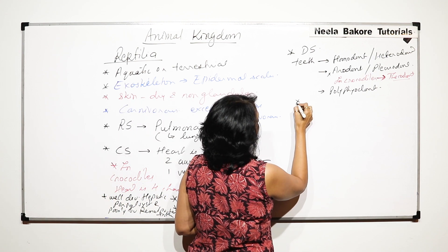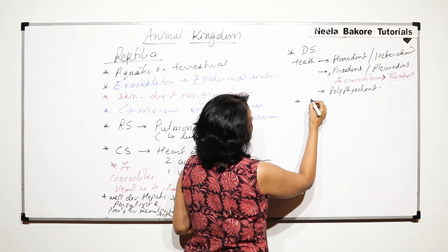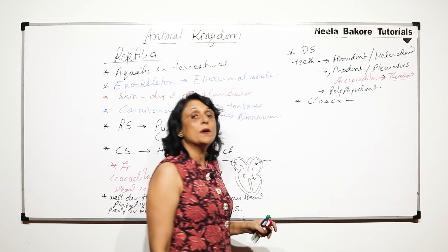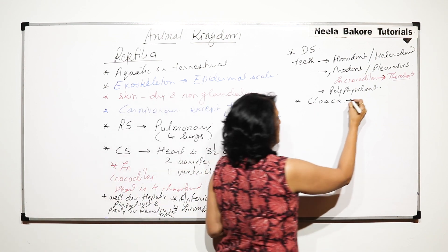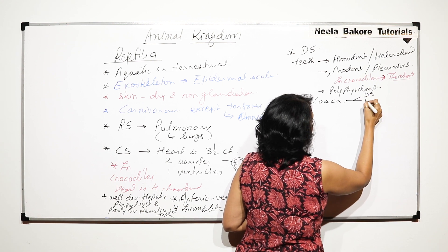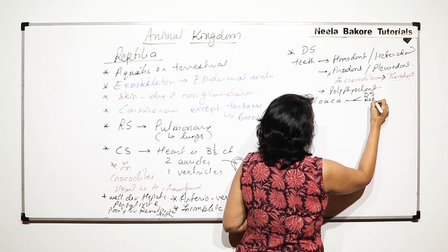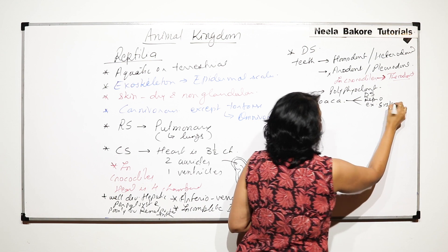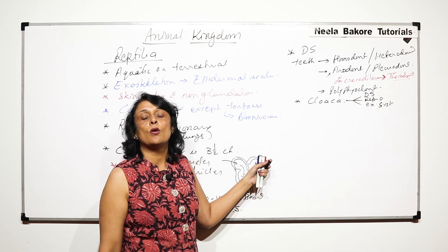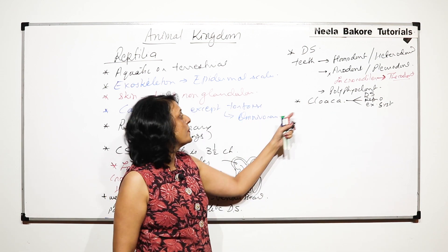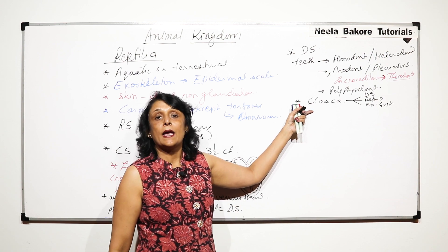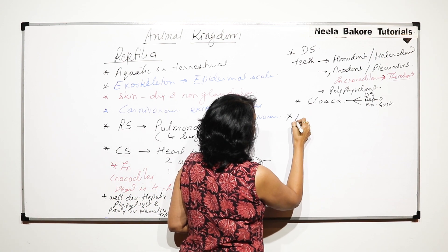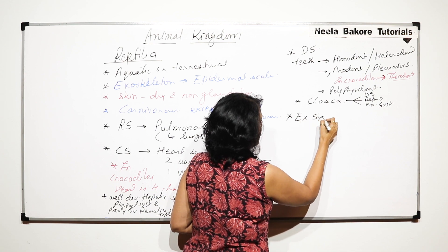One more digestive system feature is the cloaca. The cloaca is the common opening of three systems: digestive system, reproductive system, and excretory system. It is a common opening, and this cloaca also has chambers — another unique feature.